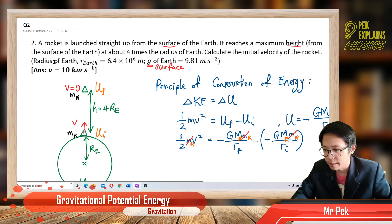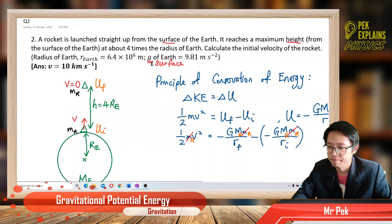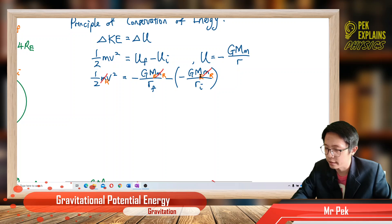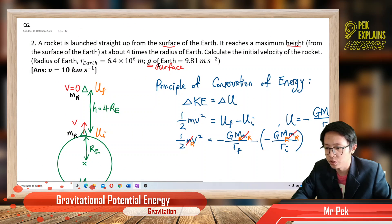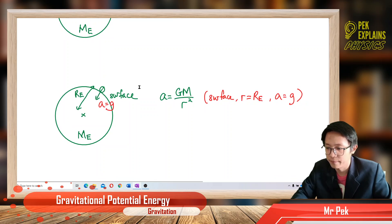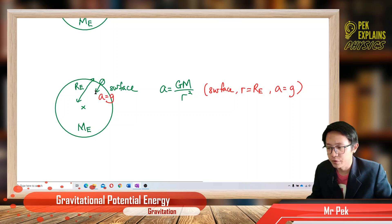The problem didn't provide the mass of the Earth, but it gives us the gravitational field strength on the surface, g = 9.81. Since I don't have the mass of the Earth, I cannot continue directly — I need to make use of the surface gravity g.